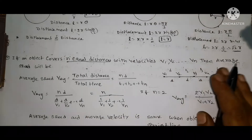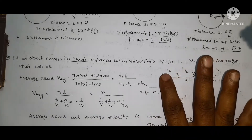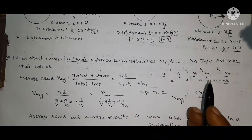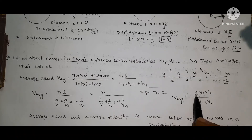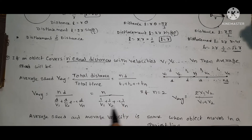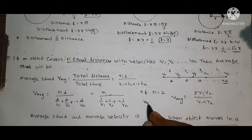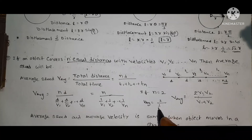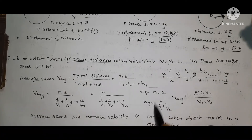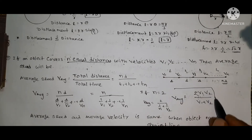For the special case of two equal parts, n equals 2: substitute into the formula and you get V_average equals 2V1V2 divided by (V1 plus V2). This is the harmonic mean of the two velocities and gives the average speed when equal distances are covered at V1 and V2.